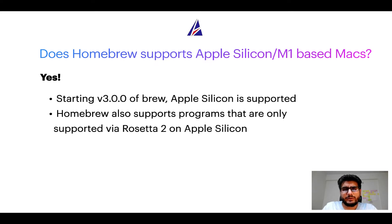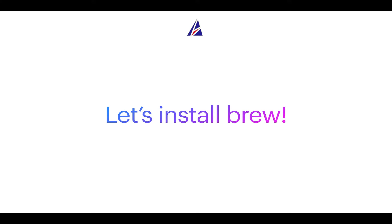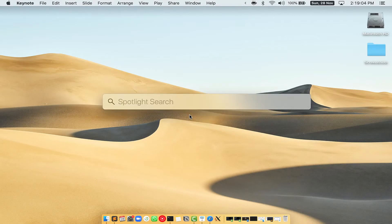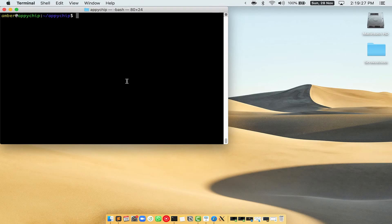Now that I have answered your questions on safety and compatibility of Homebrew, let's get to the installation process. Before we can install anything using brew, we need to install the package manager itself on your Mac. First, press Command and Space on your keyboard. This will open Spotlight Search, and then type terminal.app. You will see the Terminal app — simply double click on it to open Terminal.